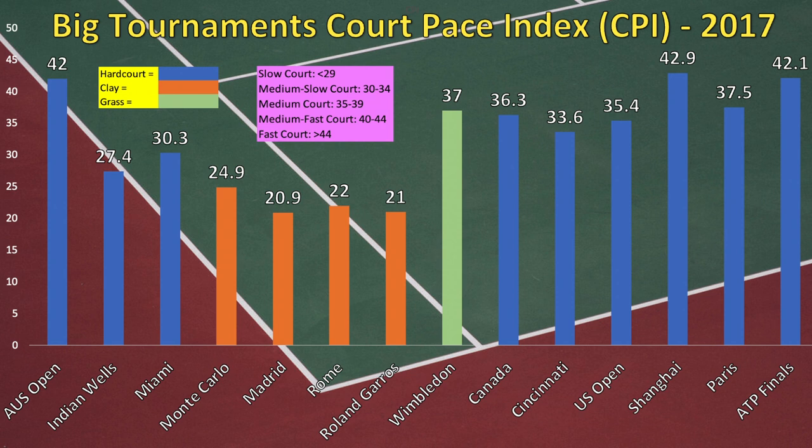Roland Garros — the French Open — is substantially slower than the Aussie Open, with just a 21 on the CPI scale. That's not too shocking, as clay courts typically play slower than hard courts. When the tennis ball makes impact with the clay, particles tend to get stuck in the ball, causing more friction and slowing things down. All clay courts are defined as slow courts — that's anything measured at 29 or lower.